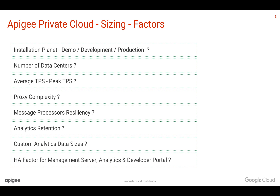The last factor is the High Availability Factor — whether you want HA for Management Server, Analytics, and Developer Portal. Based on that, the number of machines is going to vary. You need to consider all these factors before you estimate the hardware required for Apigee's private cloud.